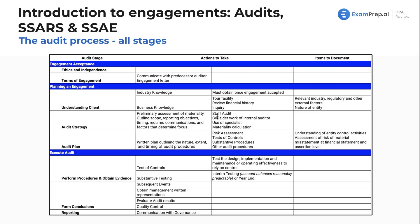We're going to talk to the staff auditors and make sure we have enough people to actually do the audit — if we don't, that's a problem. We also consider the work of the internal auditors. For example, if we're auditing Microsoft, Microsoft hires a whole department of internal auditors whose full-year job is to ensure ethical operations and properly functioning internal controls. As external auditors, we want to consider their work, talk to them, and use their findings. We also want to consider the use of a specialist — someone we may bring in if we need expertise in a cutting-edge field like blockchain technology. Finally, we need a solid materiality calculation with a real justification.